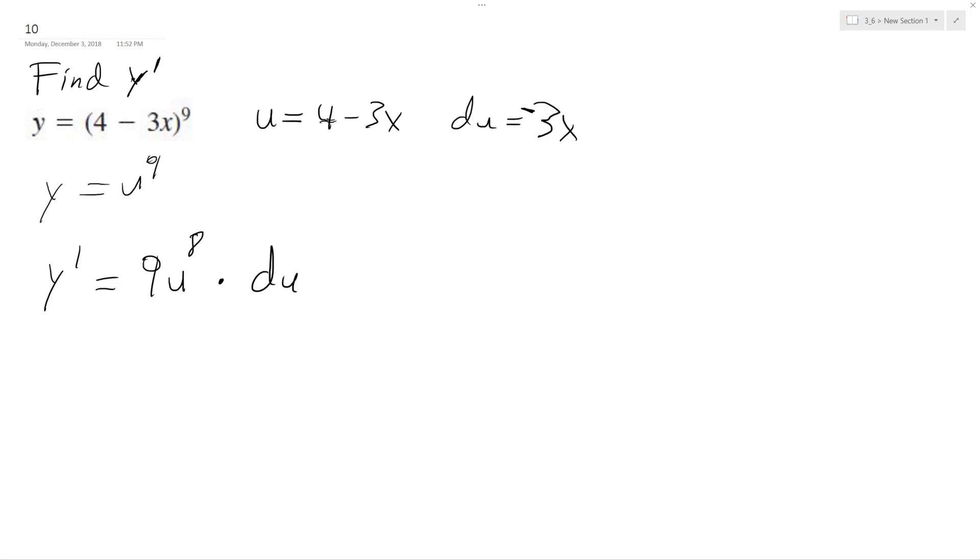All right, so now what's going to happen here is we sub back in. This is y prime of u, so y prime of x is going to be equal to 9 quantity 4 minus 3x raised to the eighth times negative 3x.